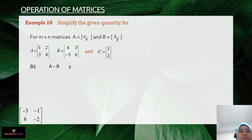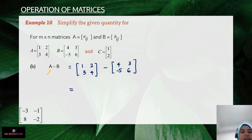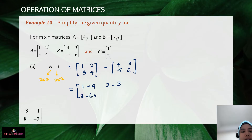Now let's look at A minus B — matrix A subtract matrix B. We rewrite the matrices first. For subtraction, you still need the same order for both matrices to perform the operation. With the same order, we can pair each element with its partner from the same position.